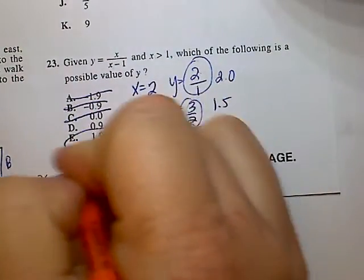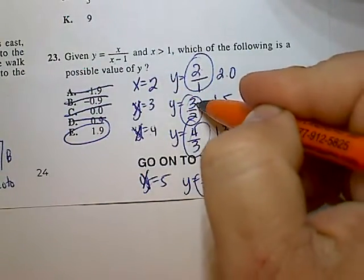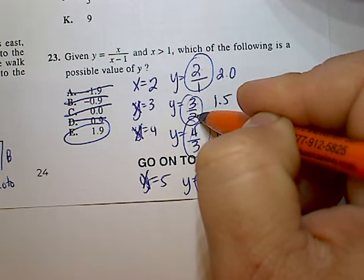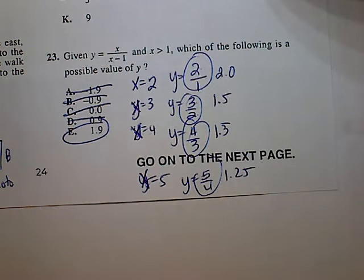So this would be a possible choice. Again, when the numerator is greater than the denominator, your value will always be greater than 1. Final answer is E.